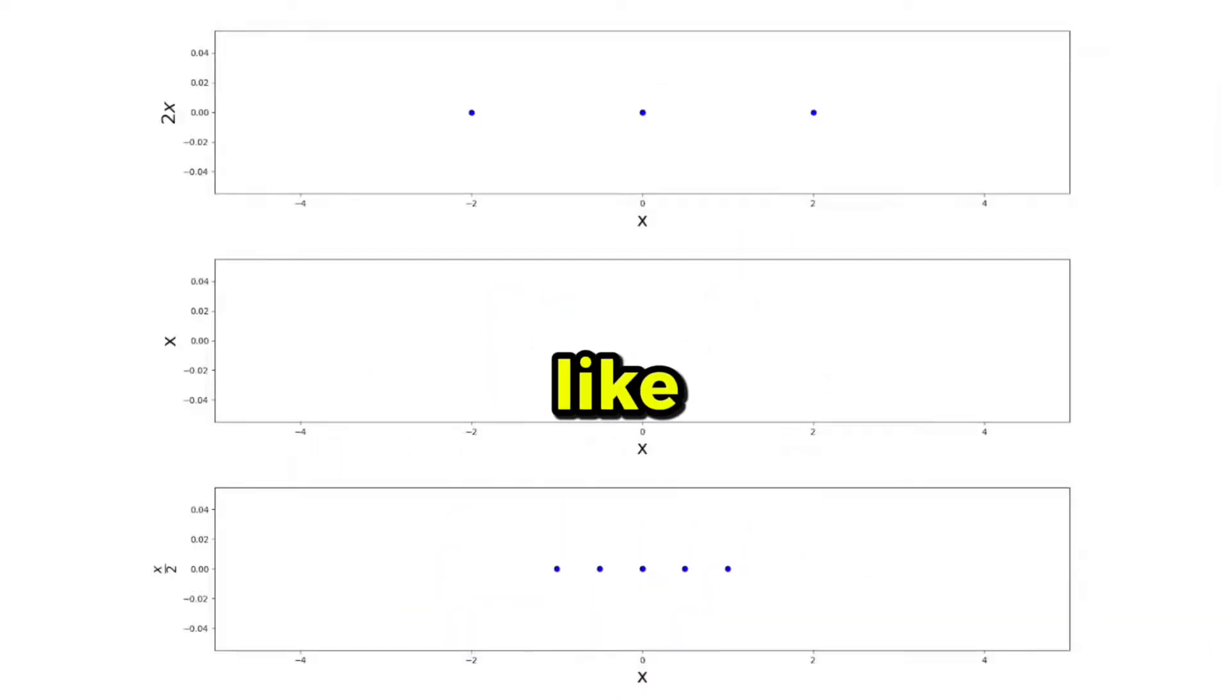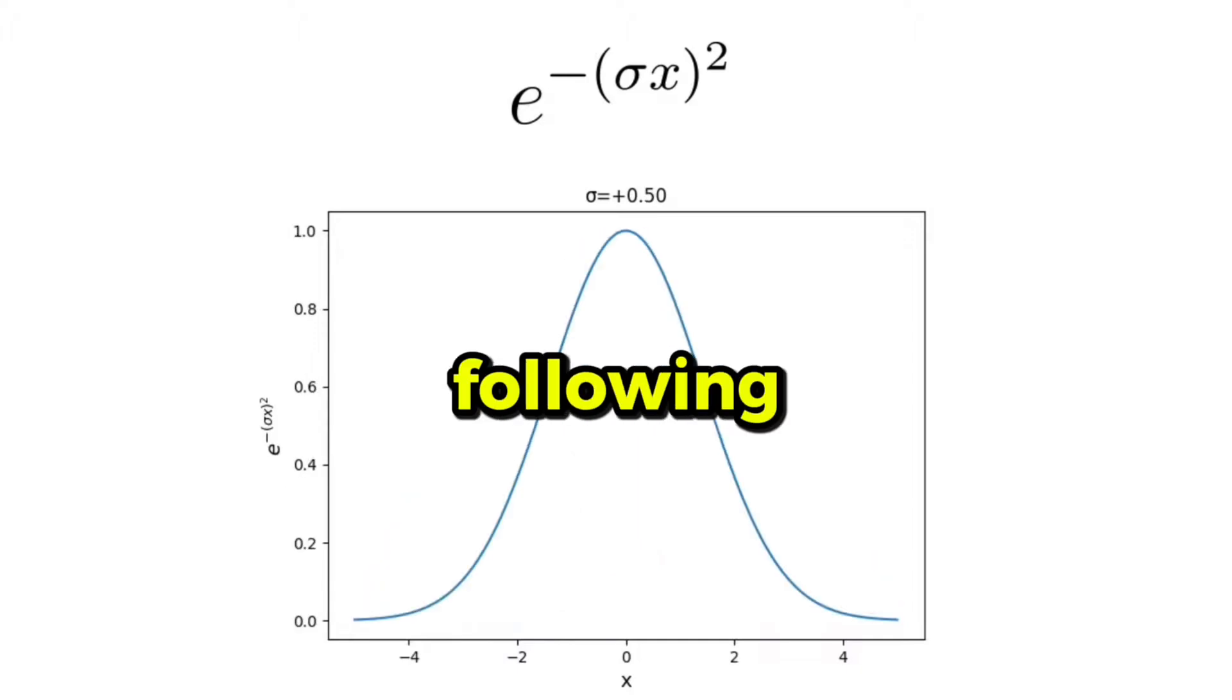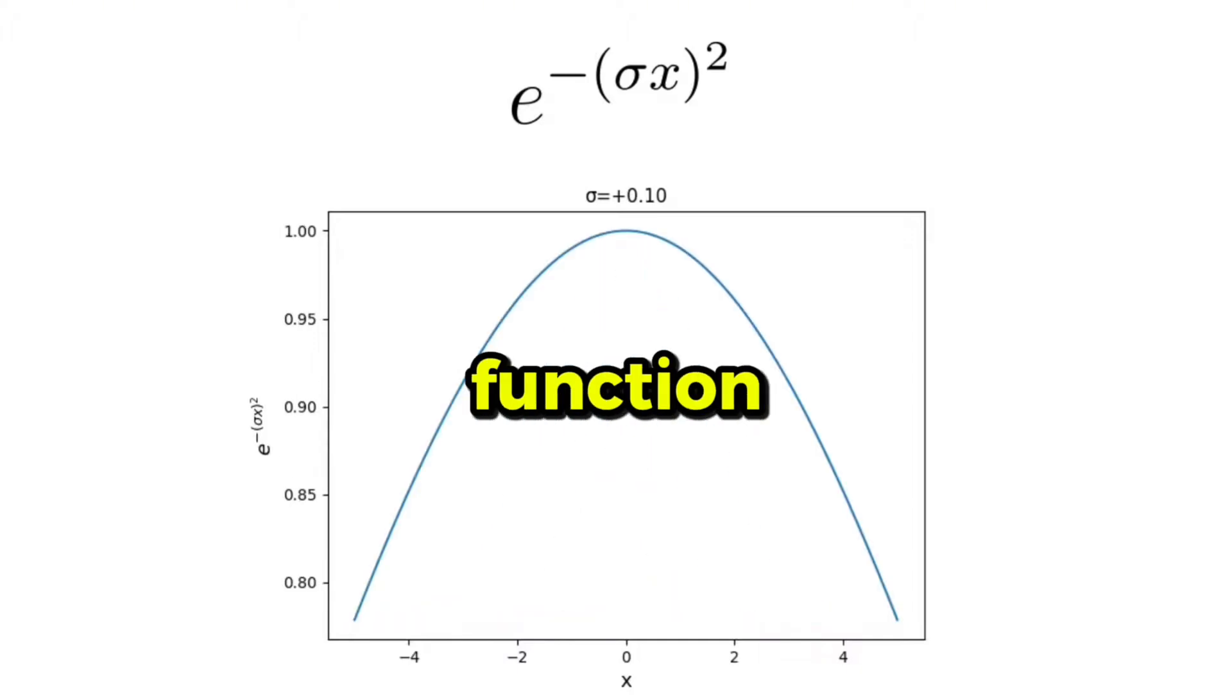Then, maybe we would like to change the shape of the bell. There are many ways to attain that, but the most simple and yet powerful method is to control the spread of our input variable by multiplying it with a constant. And if we do that, we obtain the following behavior in our bell shape function.